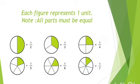So let's move ahead. Here each figure represents 1 unit. Note: All parts must be equal. In first figure, circle is divided into 2 equal parts. 1 is shaded. So fraction of shaded parts is 1 half.